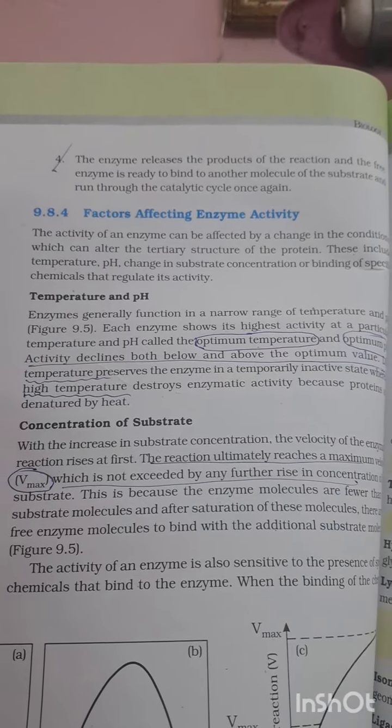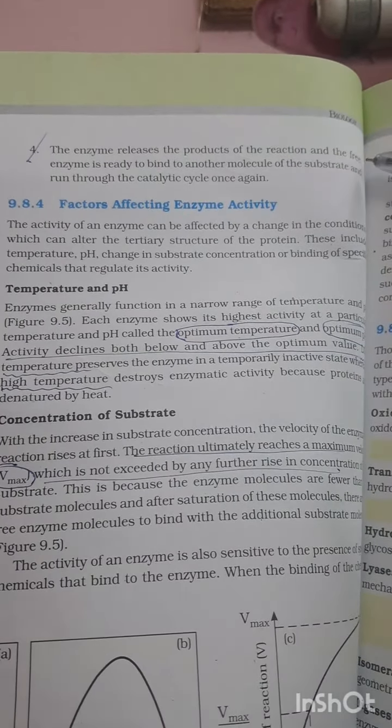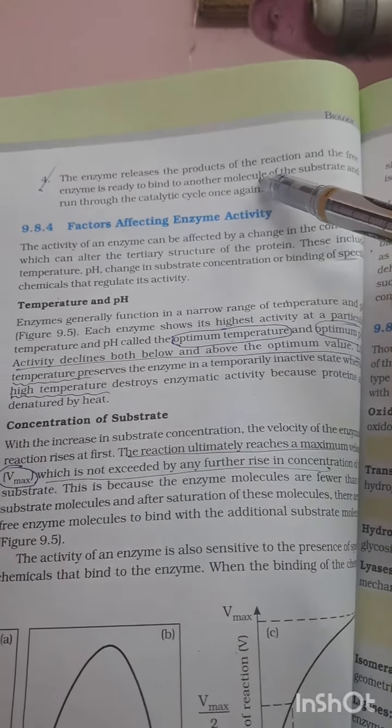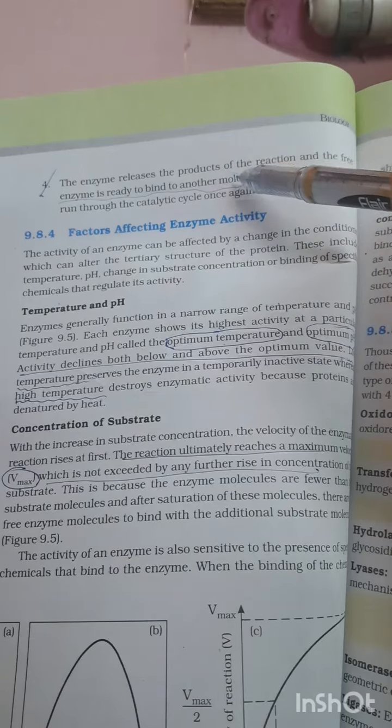Now for the fourth and the last one in this cycle is that the enzyme releases the product and the free enzyme is ready to bind with another molecule. You have to remember this sentence - a free enzyme is ready to bind to another molecule.